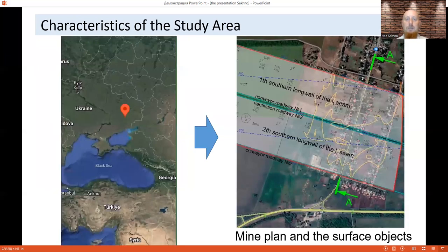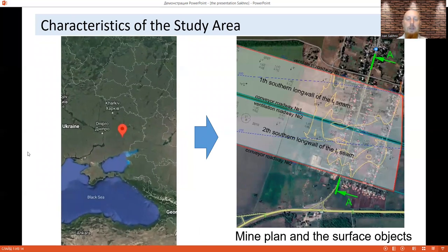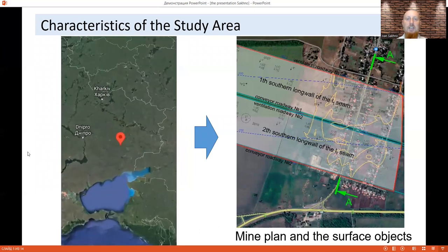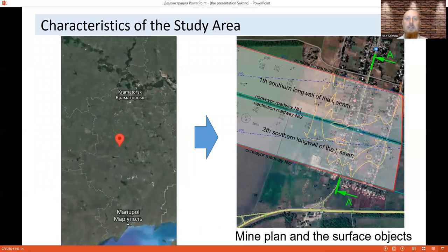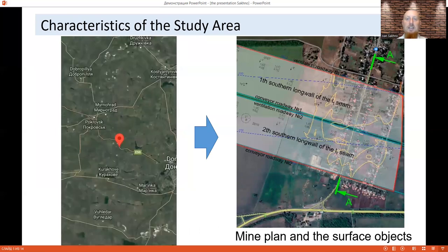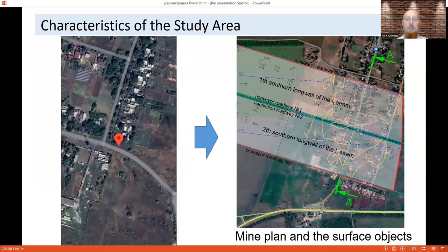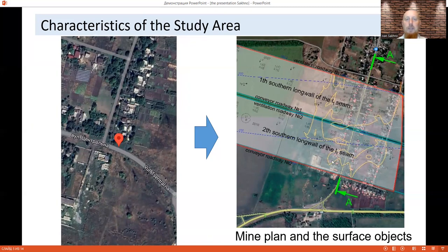The case study mine is located in the west-southwest part of Pokrovsk. The Selidova city is located near the western border of the minefield. Mikalevka and Marinovka villages are located in the undermining zone. The part of the mine plan with surface objects is shown in the slide. The highway Donetsk-Selidova is in the undermining zone of the southern longwall.